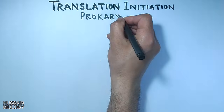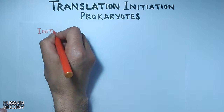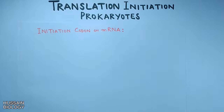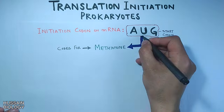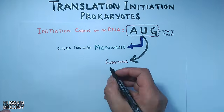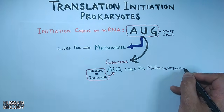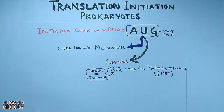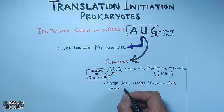Translation begins at a specific codon on mRNA called the initiation codon, which is the AUG start codon. This start codon AUG generally codes for methionine, but in eubacteria — that's in prokaryotes — the initiating AUG codes for N-formyl methionine (fMet).